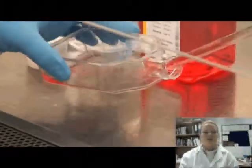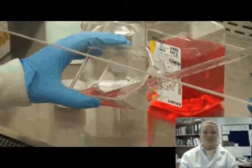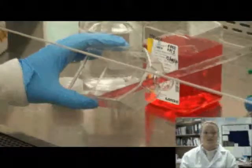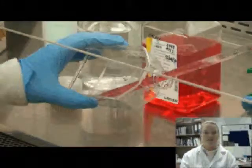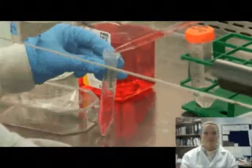I am now re-suspending the cells in 9ml of media. I am now transferring the cells to a falcon tube which I will then take upstairs to the lab to begin the next process of karyotyping, which is making chromosome spreads.